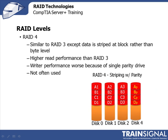RAID 4 is very similar to RAID 3, with really only two differences. With RAID 4, data is striped at the block level rather than the byte level. You'll also notice a slightly higher read performance, while write performance might be worse, again because of the single parity drive. In terms of Server Plus certification and real-world application, you're not likely to see RAID level 4 in use.